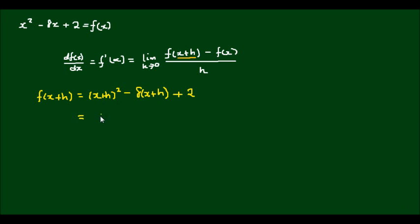The first term will expand to be x squared plus 2xh plus h squared. If I expand the negative 8 in, I'll get minus 8x minus 8h plus 2. And that's pretty much how I'm going to leave this expression.